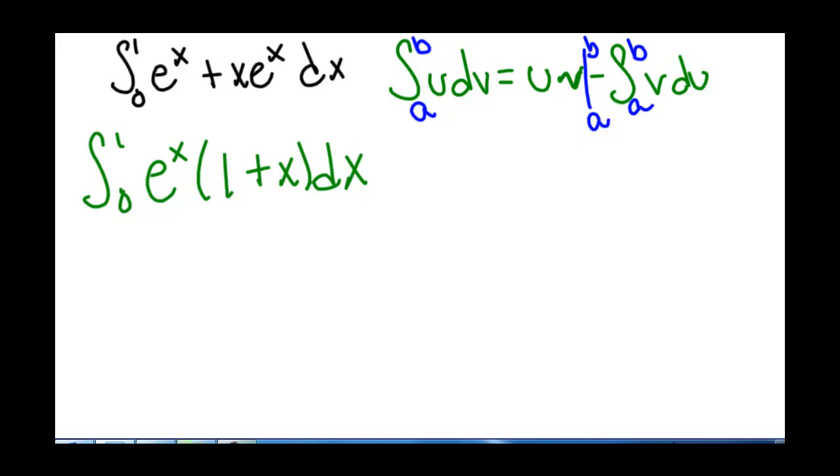So if we have the integral from 0 to 1 of e to the x times the quantity 1 plus x dx, we still need to find our u and our dv.